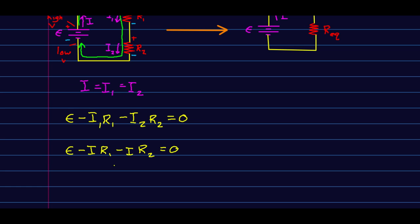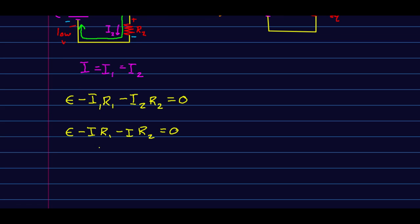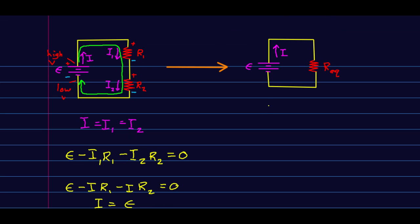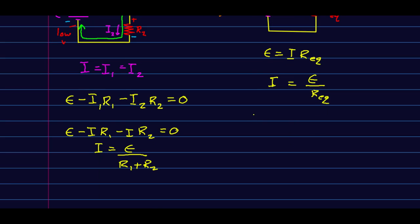And so if I were to solve for the current, whereas if I do the same thing over in the equivalent circuit, I simply have this, and comparing those two, I can see that the equivalent resistance is just the sum of the two individual resistances.